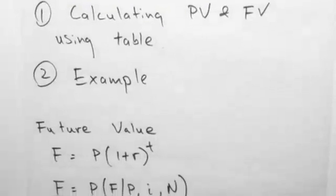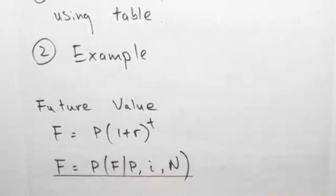Let's start with future value. Using the equation, future value is the present value times 1 plus r to the t. If we were to use the table, we would rewrite this as F equals P bracket F slash P comma i comma N. This bracket is simply replacing the 1 plus r to the t, and it says finding F given P, given the interest rate, and given the period.